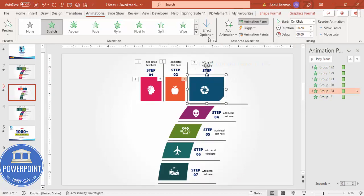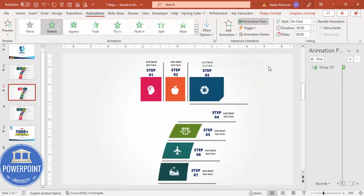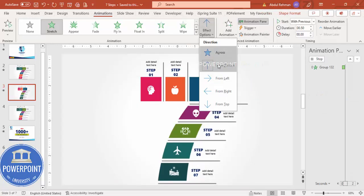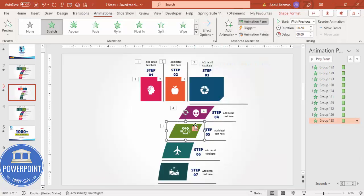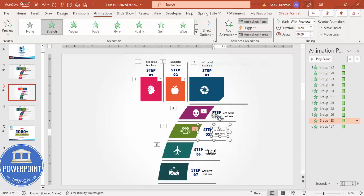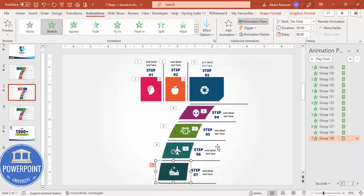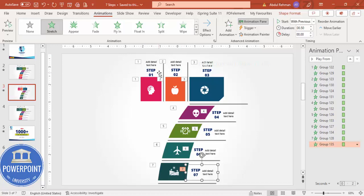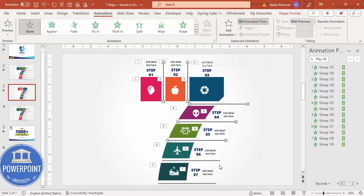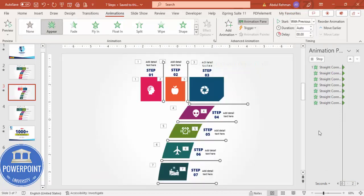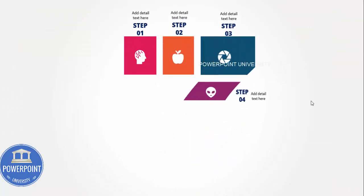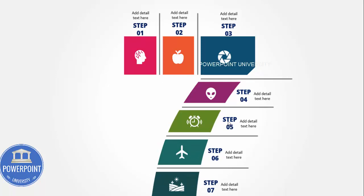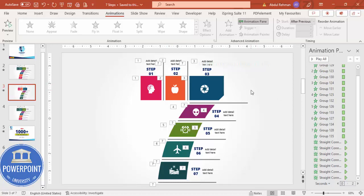Continue using the Animation Painter for the remaining groups, adjusting directions - from left, from top, from left as needed. Copy the full animation quickly across all steps. Finally, select all the lines using Shift+click, set them to Appear after previous. Playing through: step one, step two, step three, four, five, six, and seven, then the lines appear. This is a simple animation you can use with numbers.